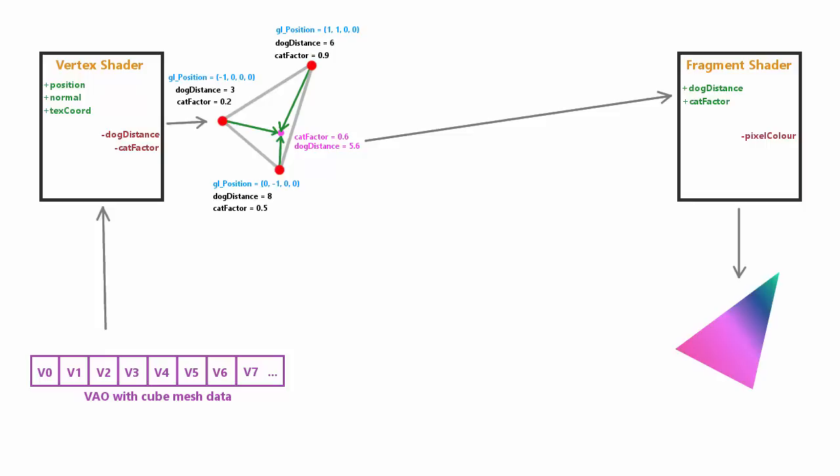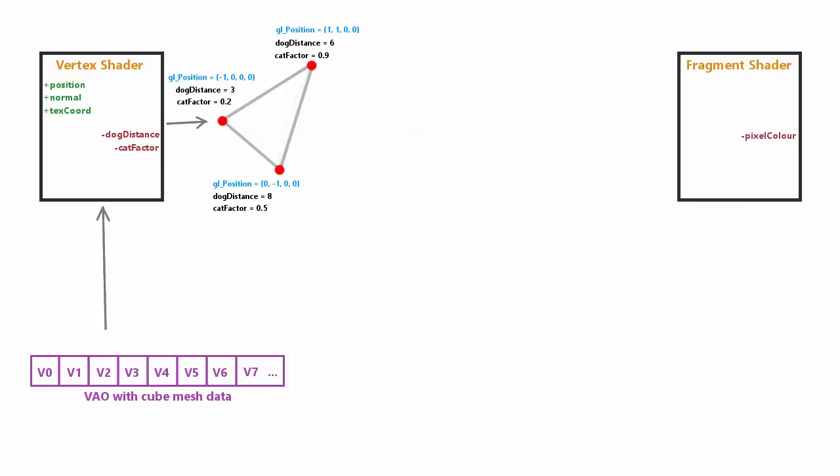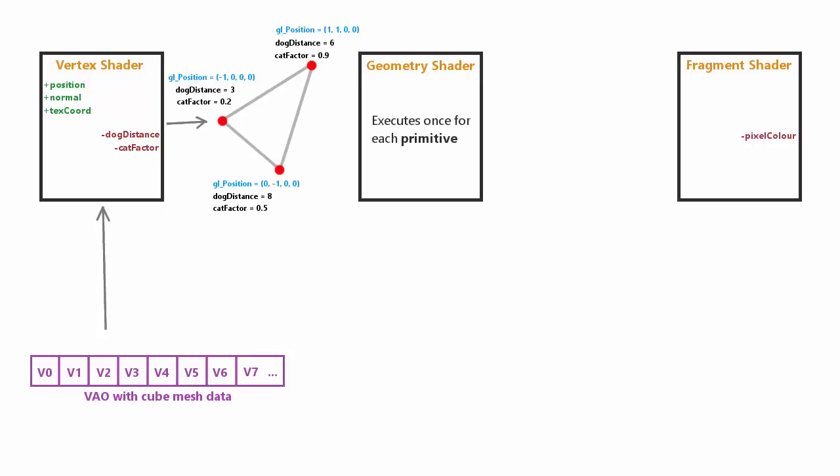This is the shader pipeline we've always used, but we can add more shader stages to it, such as the geometry shader. The geometry shader fits in right after the primitives have been assembled. It then executes once for each primitive — so if we're rendering triangles it executes once per triangle, once per line if rendering lines, and once per point if rendering points.